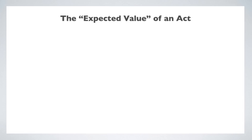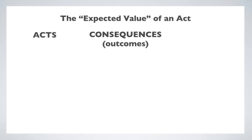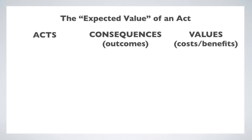So, what is the expected value of an act? To start, we need to distinguish an act, which is something you do, from the consequences of the act, which are all the possible outcomes of performing the act. And then we need to talk about the costs and benefits of each of the possible outcomes. These are values associated with each outcome. In economics and formal decision theory, these are called utilities — all they are is a measure of how much we care about each of the different outcomes.